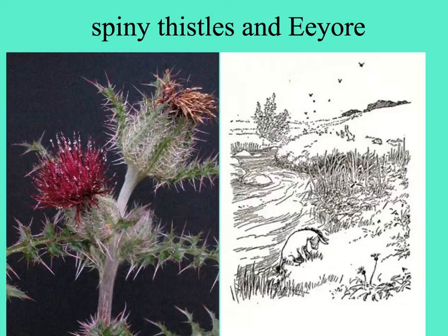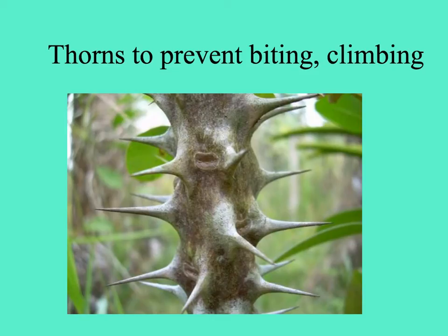Here's an example of spines on a thistle — and on the right, a famous character from Winnie the Pooh who was glum and grouchy and liked to eat thistles. Here are some thorns on a stem; they may deter biting but also inhibit climbing on a plant.